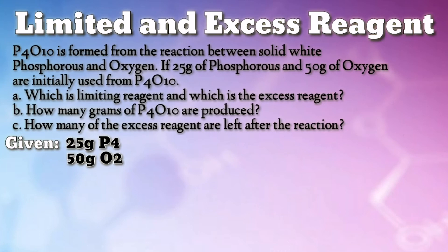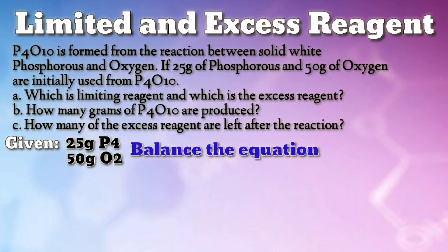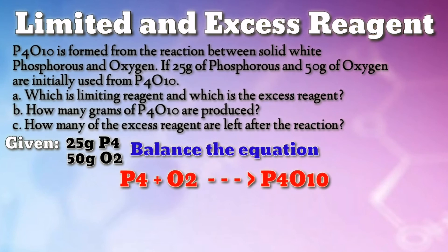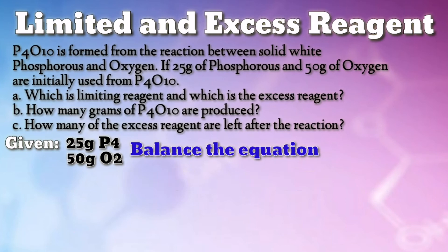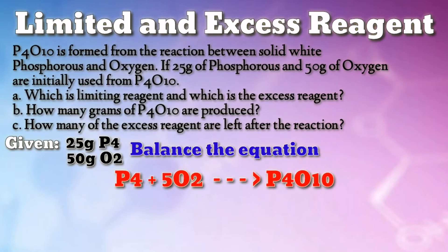Strategy, first step: write a balanced equation for the reaction. Our reactants are phosphorus and oxygen gas, yielding tetraphosphorus decoxide. The balanced equation is: P4 + 5O2 → P4O10.